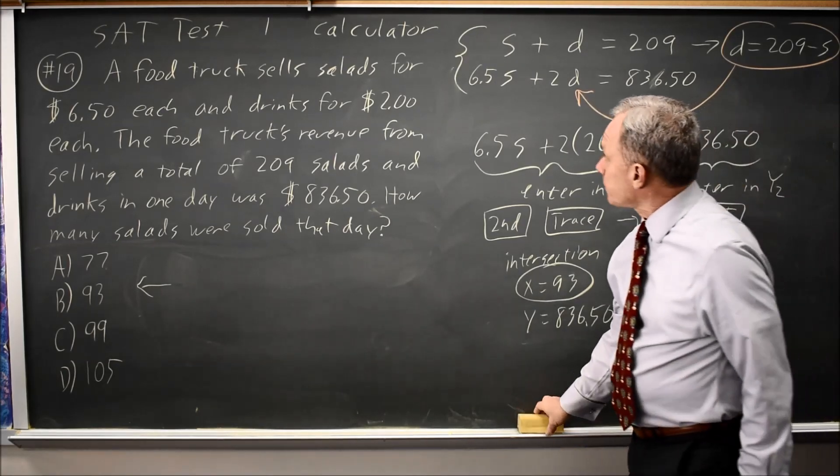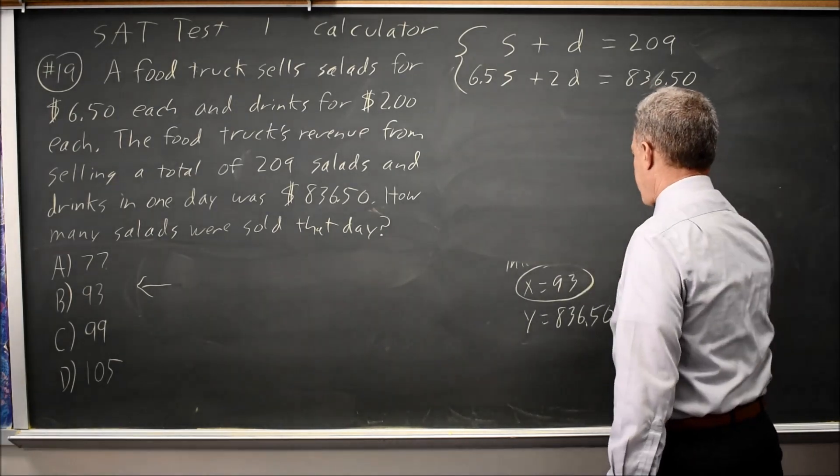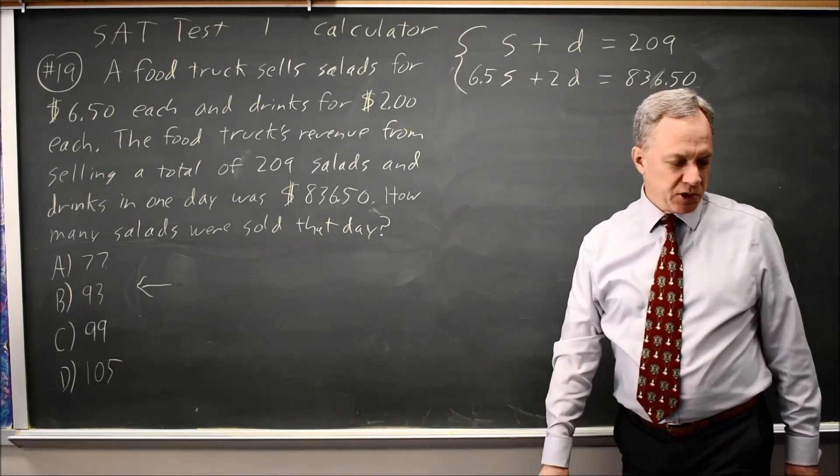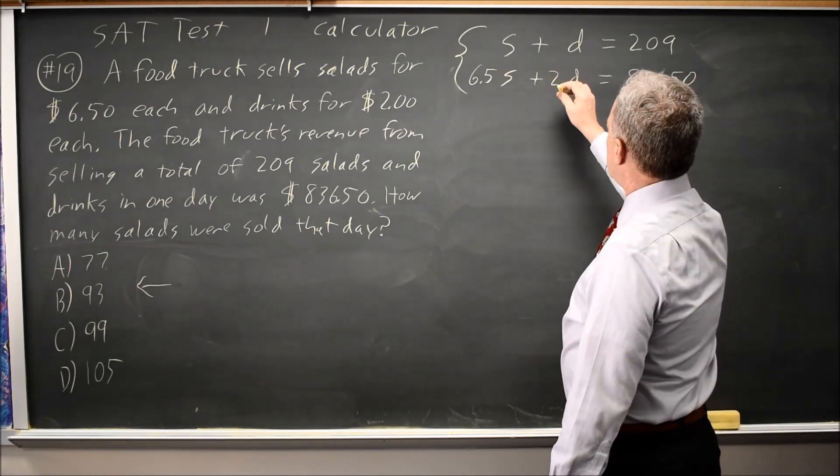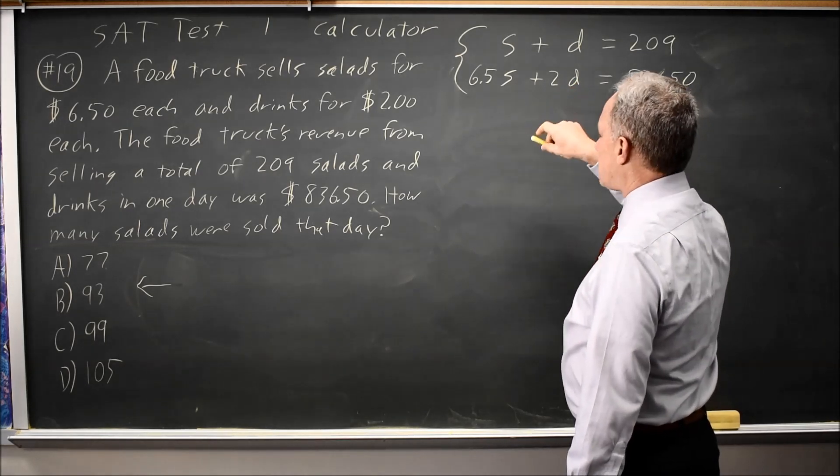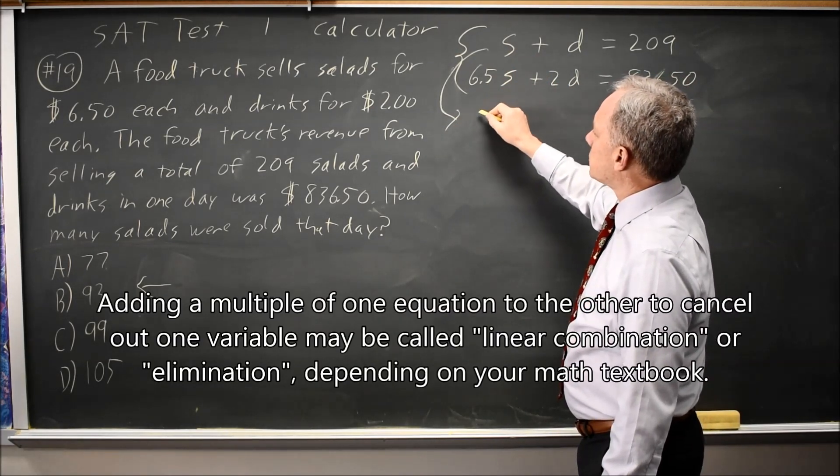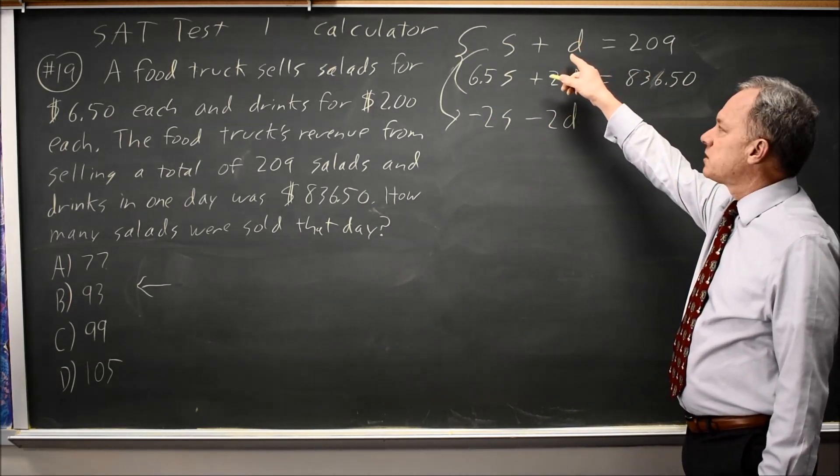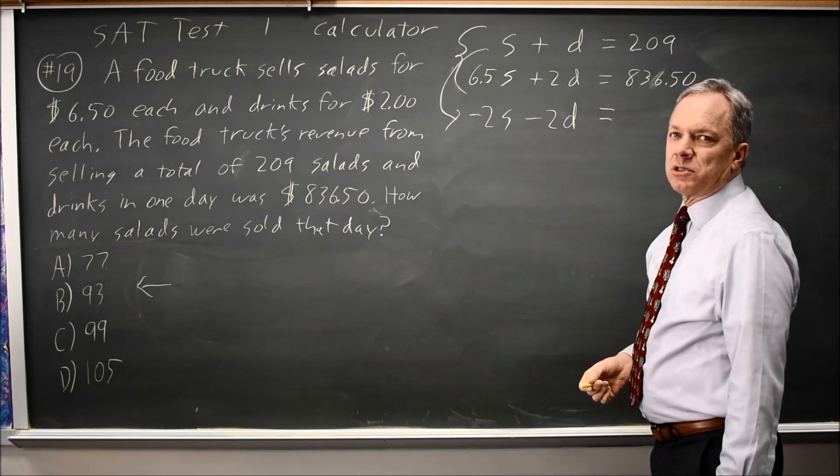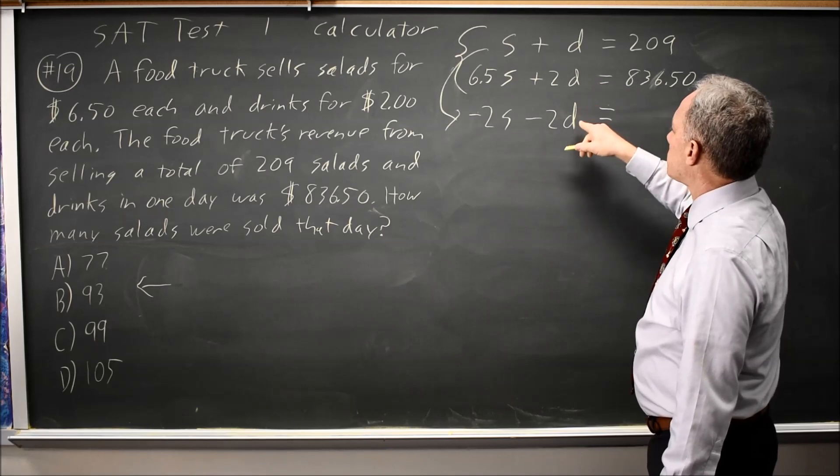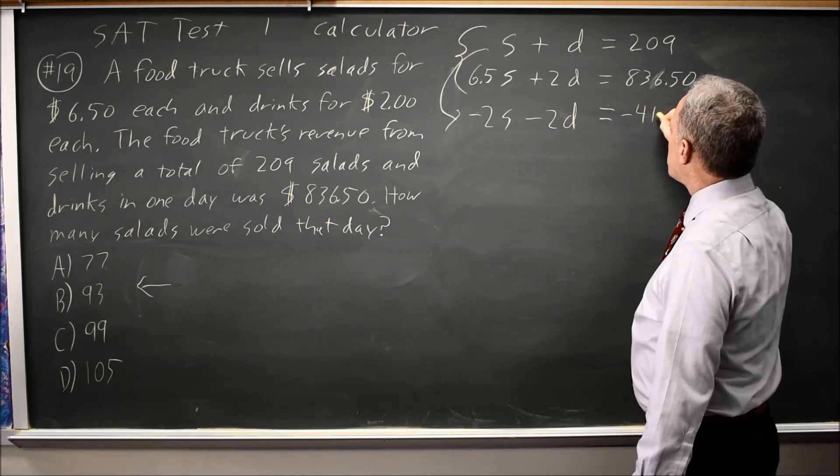Let's try another method. I tried matrices, I tried substituting in numbers, I tried substitution just now. Let's try eliminating a variable by multiplying this first row through by negative 2. So negative 2S minus 2D. I chose negative 2 because 2D and negative 2D, when I add them, will cancel. So I'm going to end up adding these two equations, and there will be 0D, so the only variable left will be S. And twice 209 is negative 418 when I multiply by negative 2.